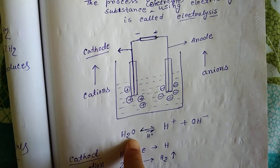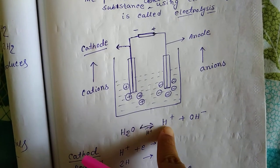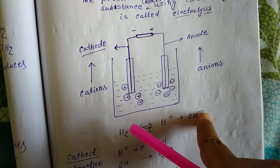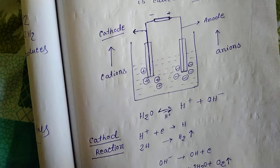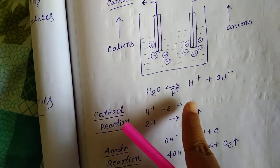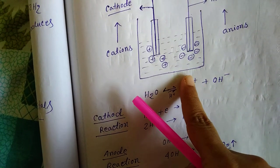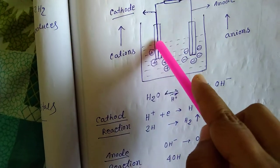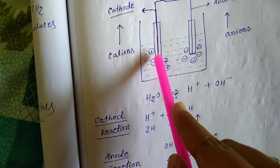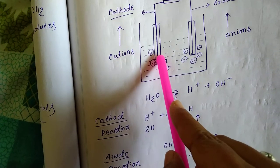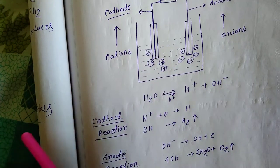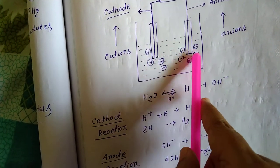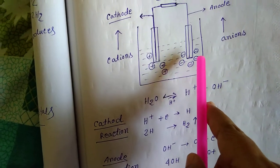H₂O on decomposition gives H⁺ and OH⁻. Here H⁺ is the cation and OH⁻ ion is the anion. When electricity passes, the cathode is the negatively charged electrode, and we know that oppositely charged particles attract each other, so the positively charged ion — that is, the cation — goes towards the cathode.